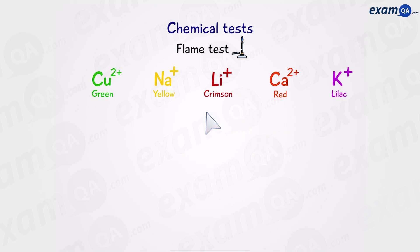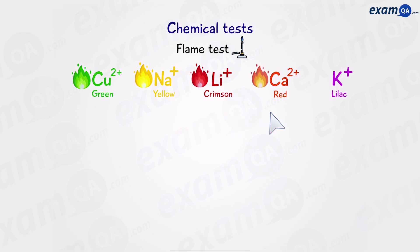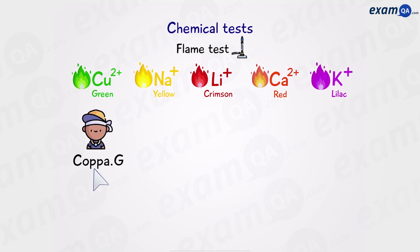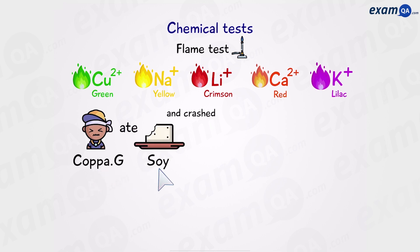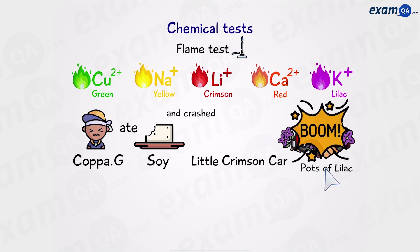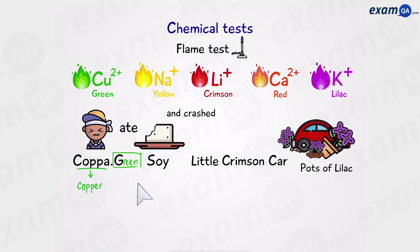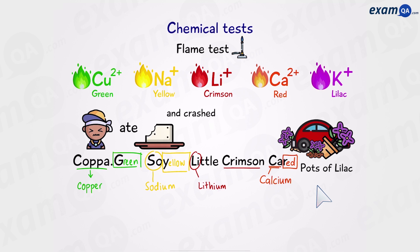Here are the colours we have to know. Copper gives a green flame. Sodium is yellow. Lithium is crimson. Calcium is brick red, or orange-red. And potassium is lilac. Here's a good way to memorise the colours: Copper G-ate soy and crashed his little crimson car into pots of lilac. So copper is green, sodium is yellow, lithium is crimson, calcium is red, and potassium is lilac.